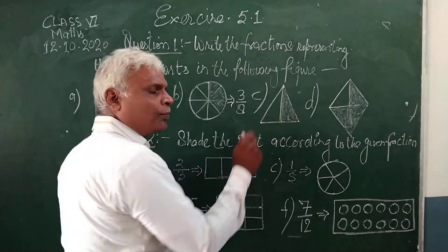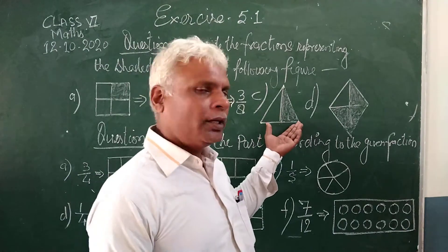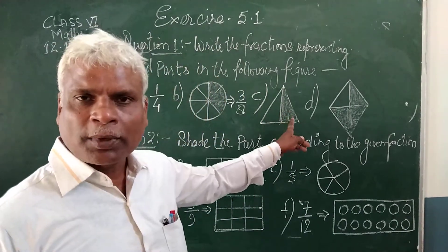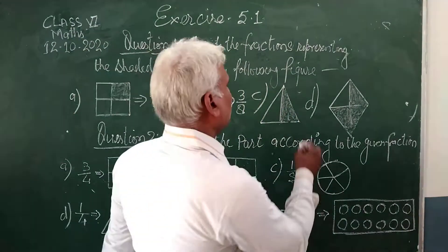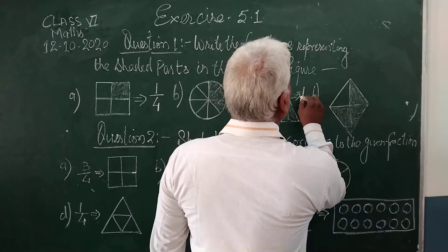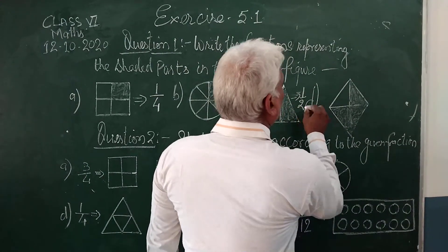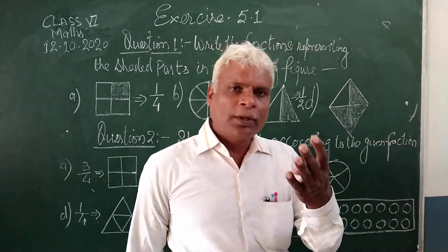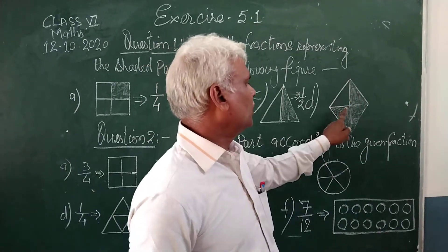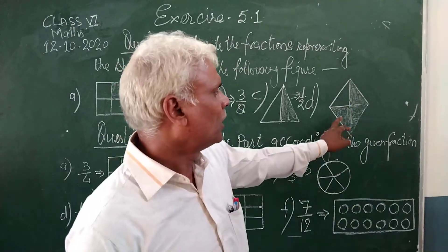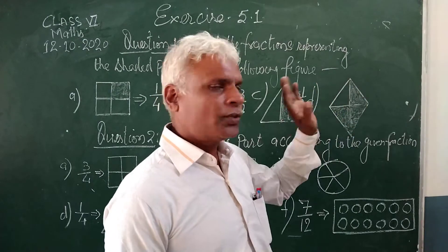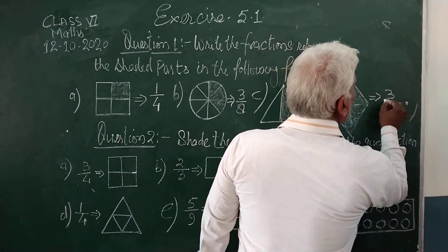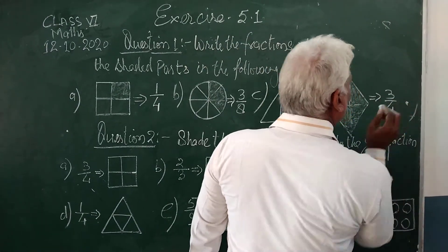Here there are 2 parts. The triangle is divided into 2 equal parts. Out of the 2, one part is shaded. Therefore its fraction is 1 upon 2. And here this figure is divided into 4 parts — 1, 2, 3 and 4. Out of the 4, 3 parts are shaded. Therefore its fraction is 3 upon 4.